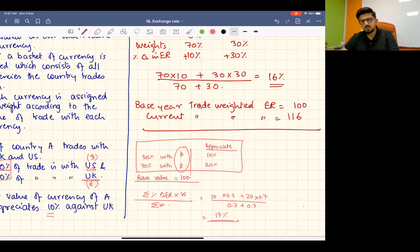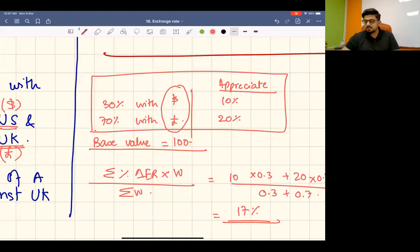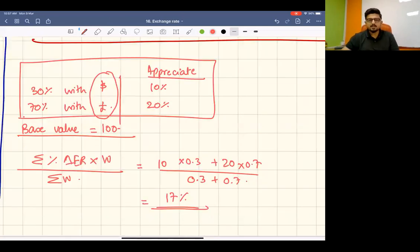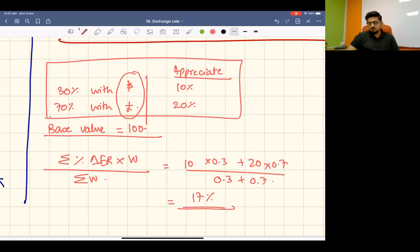This means the country's currency appreciated 17% against the basket - the basket that has pounds and dollars. If it appreciated, that means the current exchange rate index is 117, with the base being 100. So it increased by 17.